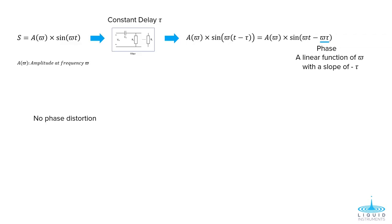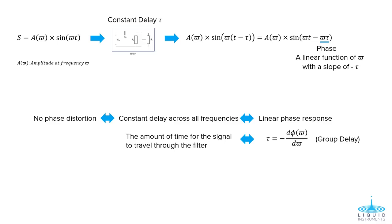This means in order to minimize phase distortion or to achieve constant delay across frequency, the filter should have a linear phase response as a function of frequency. The slope of the phase equals the negative delay time of the filter, which is also called group delay. If the filter has a constant group delay, it introduces no phase distortion.